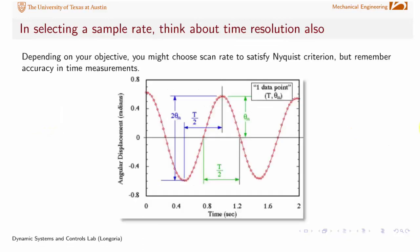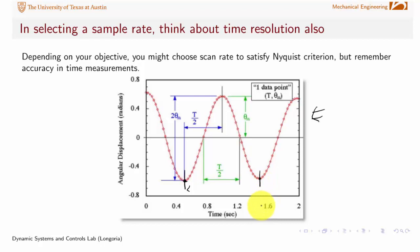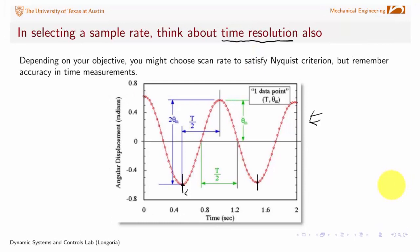Don't overlook the fact that it's not just about sampling to satisfy a frequency criterion like Nyquist — you also want to satisfy resolution in time. For example, in the pendulum experiment, you'll be looking at oscillations and estimating the period from the time between peaks. You want to make sure you get enough points to capture those peaks well enough to measure the time between them. Sometimes Nyquist sampling is satisfied but you still don't have good time resolution for resolving the data. Be mindful of that as well.